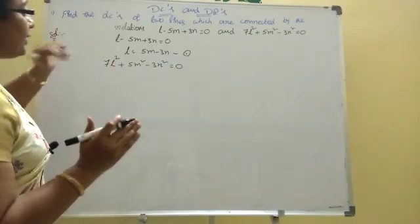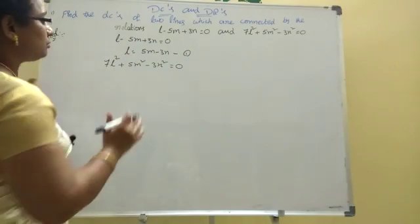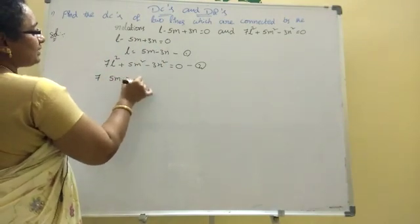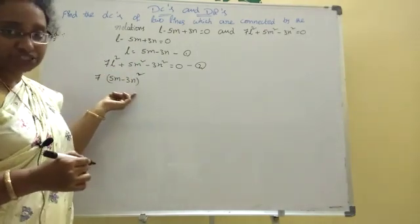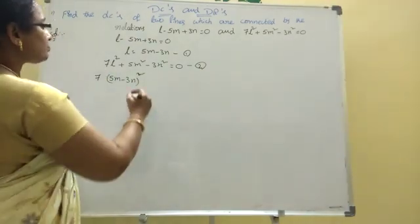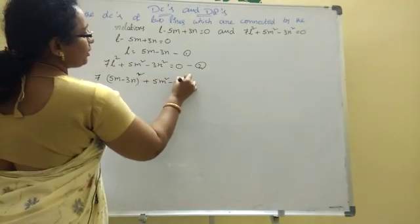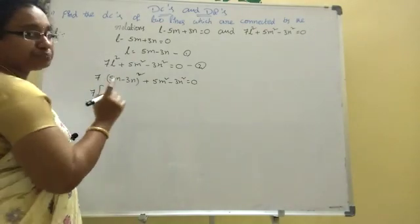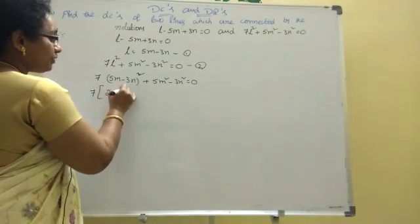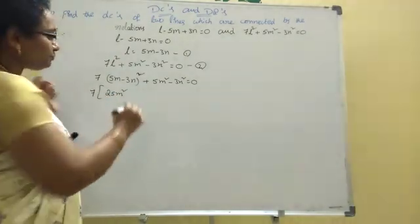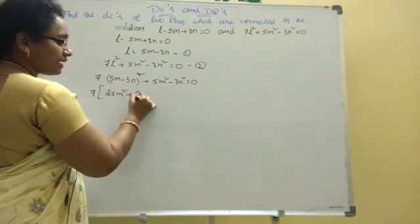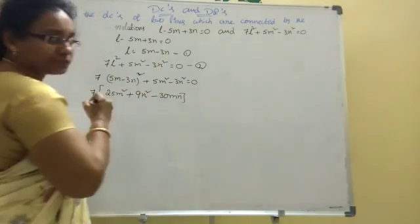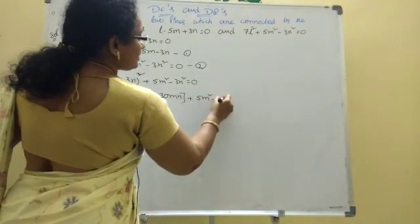The second given equation is 7L squared plus 5M squared minus 3N squared equal to 0. Now substitute the L value into equation 2. That gives 7 into (5M minus 3N) whole square. Expanding: 25M squared minus 30MN plus 9N squared, giving 175M squared.